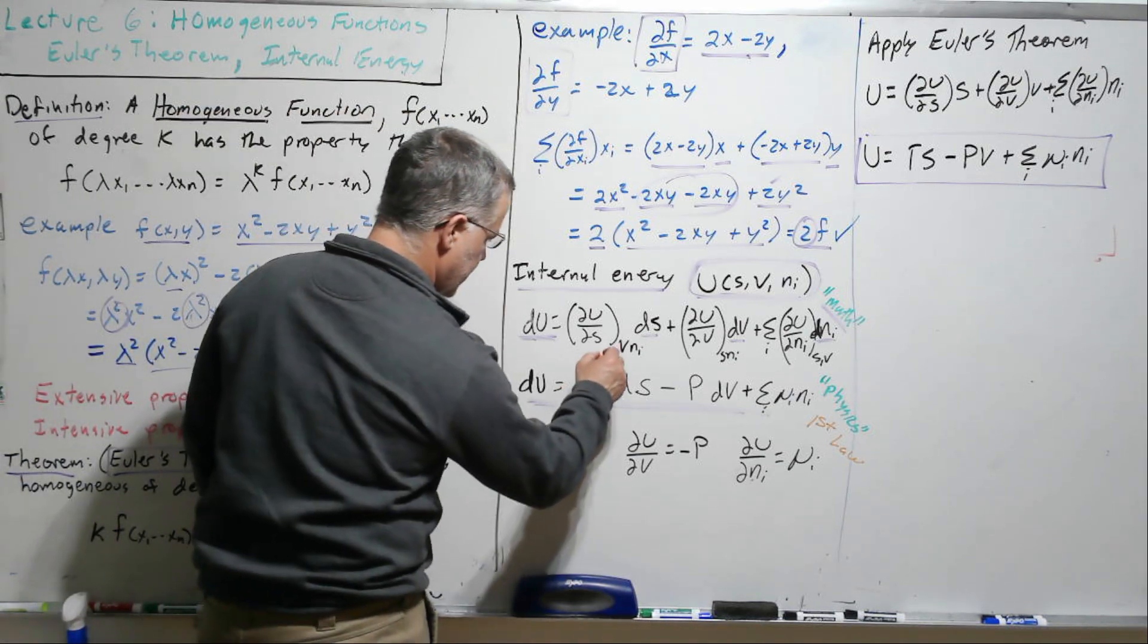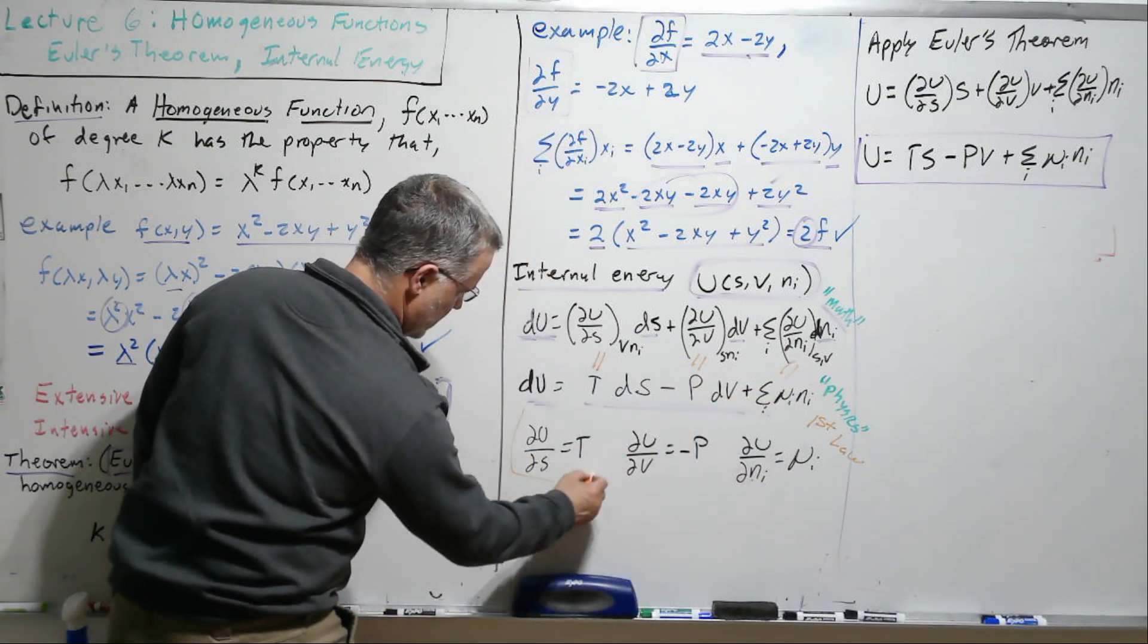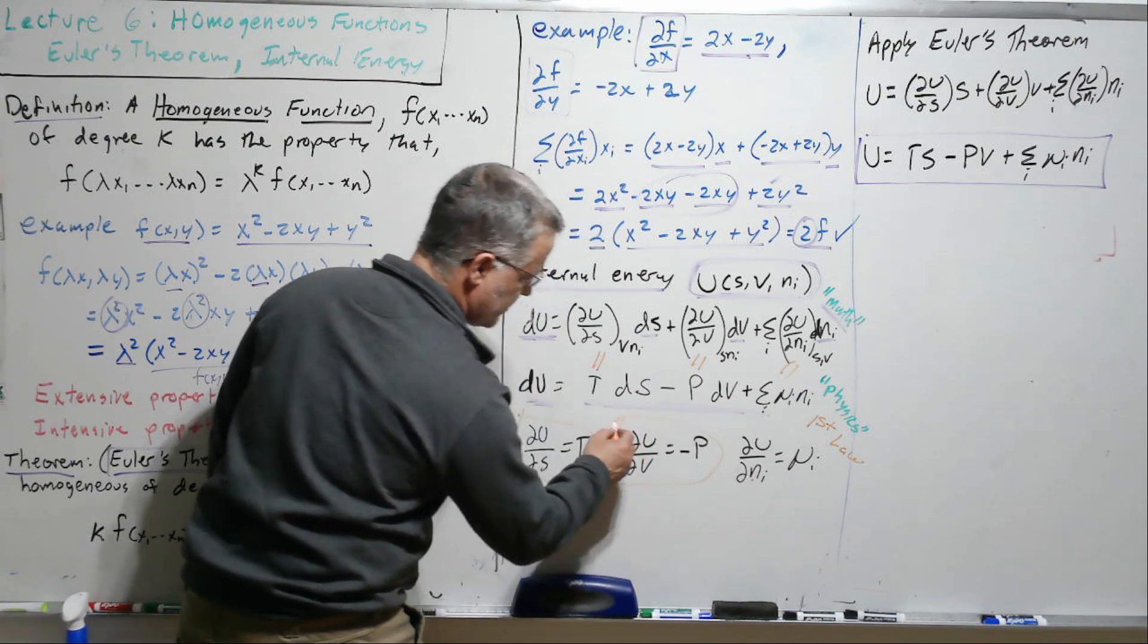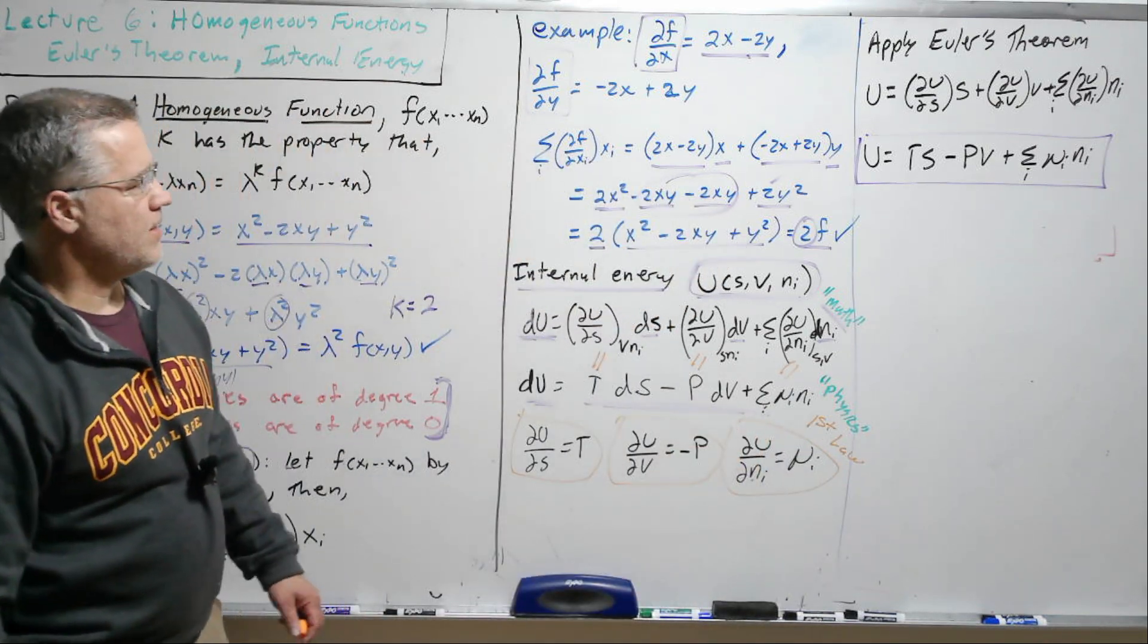So this is this, this is that, and that's that. So dU/dS is T. dU/dV is minus P. And dU/dN is chemical potential.